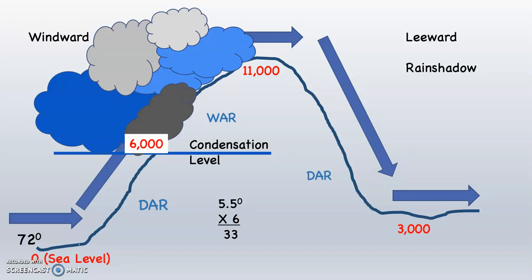Then ask yourself: at 6,000 feet, is that air warmer or colder than it was at sea level? The answer is colder. So you take 72 degrees — the given at sea level — minus 33, because that's how many degrees the air changed as it rose from 0 to 6,000 feet. 72 minus 33 is 39 degrees, which tells you the temperature of that rising parcel at its condensation level, where it first reaches 100% relative humidity, is 39 degrees.